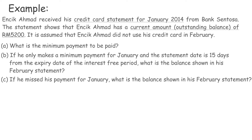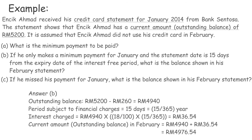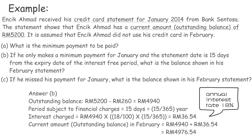Answer A. Current amount: RM 5,200. 5% of current amount = (5/100) × RM 5,200 = RM 260. This amount exceeds RM 50, thus the minimum payment to be paid is RM 260. Answer B. Outstanding balance = RM 5,200 − RM 260 = RM 4,940. Period subject to financial charges = 15 days = 15/365 year. Interest charged = RM 4,940 × (18/100) × (15/365) = RM 36.54. Current outstanding balance in February = RM 4,940 + RM 36.54 = RM 4,976.54.